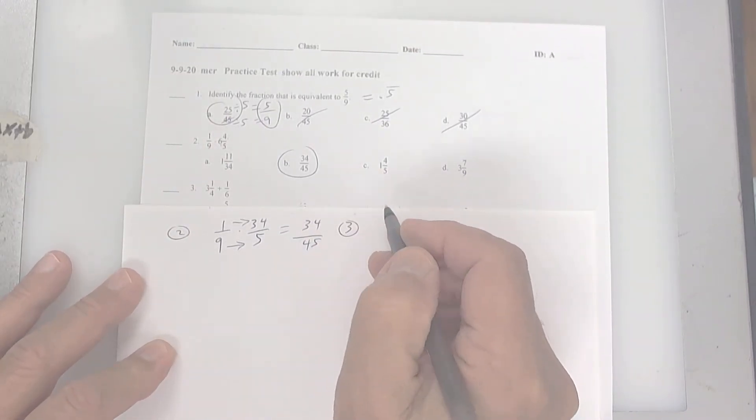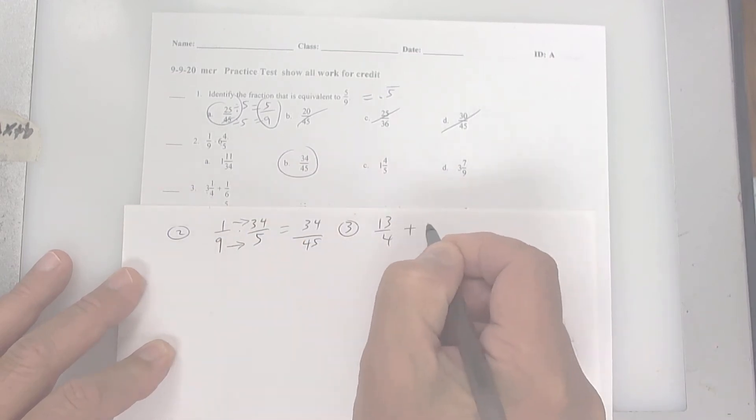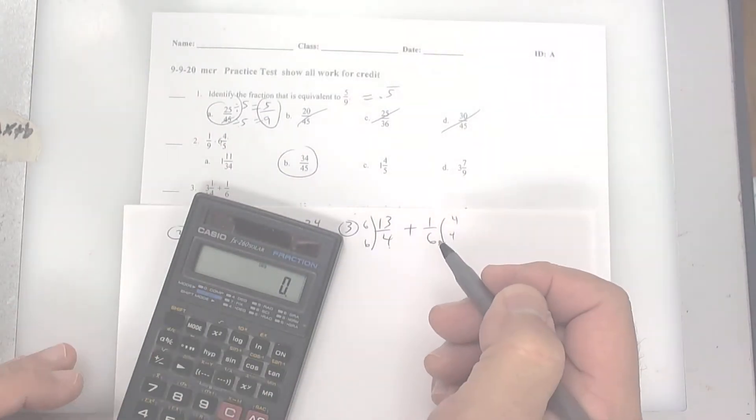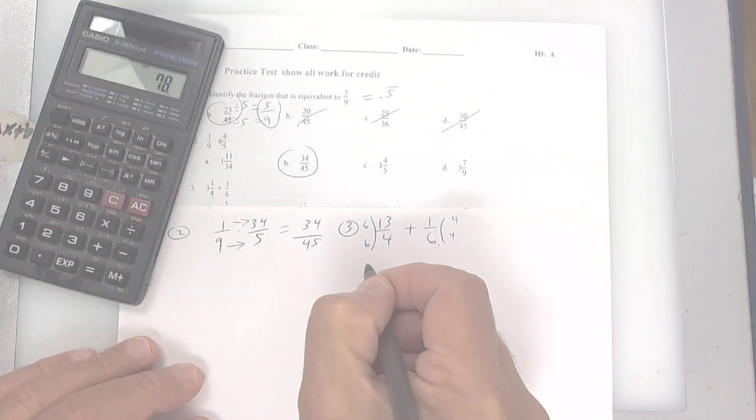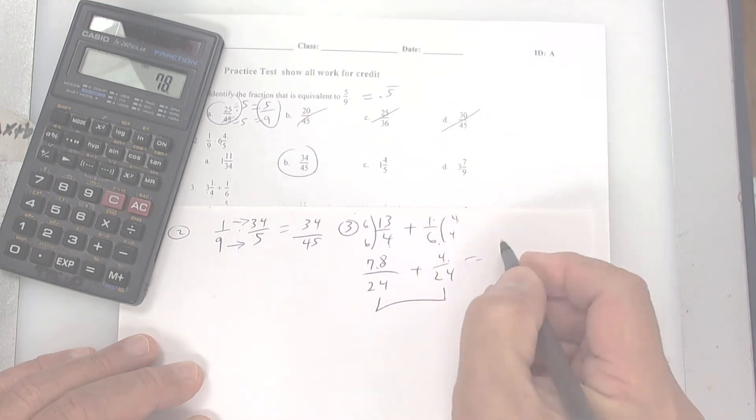All right, number 3, you're adding. Remember, you need the least common denominator. 3 times 4 is 12. 13 over 4 plus 1 over 6. Take the 6 and put it over here. Take the 4 and put it over here. So you're going to get 6 times 13, some big number. And I get 78. So 78, 6 times 4 is 24. This is 4 over 24. I add that up. Got the same denominator.